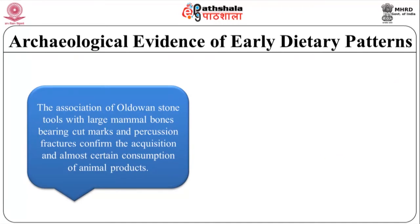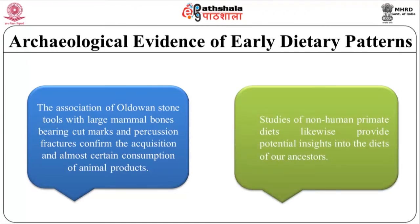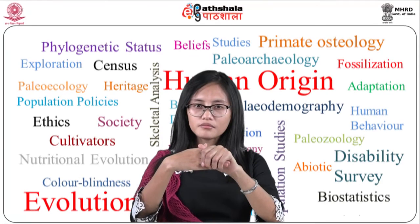The association of Oldowan stone tools with large mammal bones bearing cut marks and percussion fractures confirms the acquisition and almost certain consumption of animal products. Studies of non-human primates likewise provide potential insights into the diets of our ancestors. For example, African apes today have a penchant for easy-to-digest, sugar-rich fruits. It is mostly at times of resource stress that gorillas fall back on tougher, lower-quality food resources. Early hominins too may have preferred higher-quality food sources such as fruits except at crunch times. Comparisons of chimpanzees and bonobos suggest possible links between biome variability, diet, and tool use by hominins.